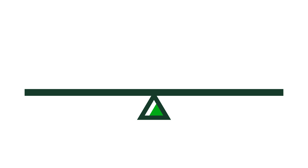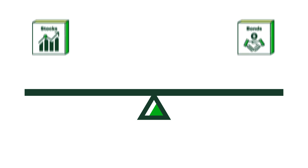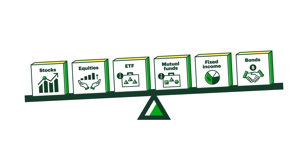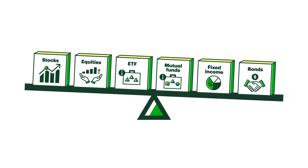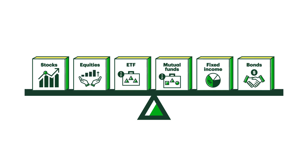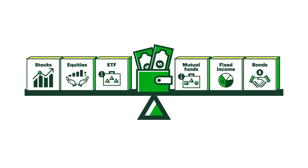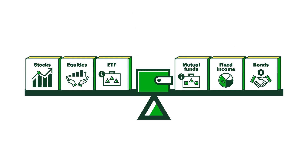Regardless of the exact number of positions an investor chooses to hold, it's wise to have exposure to multiple asset classes and industries — balance is key. Now, this might come as a bit of a surprise to some, but cash can be an important part of your asset mix too.